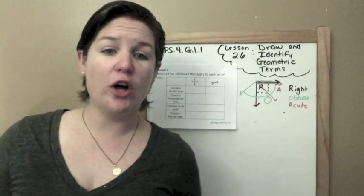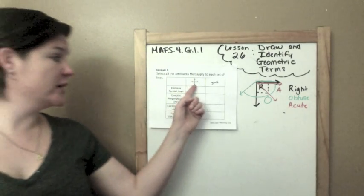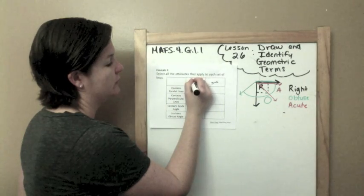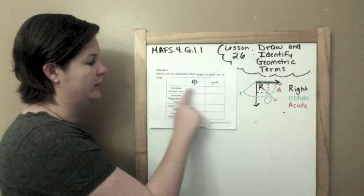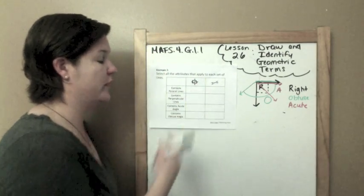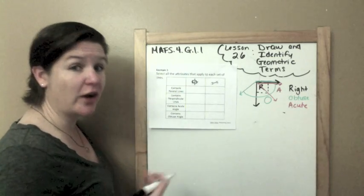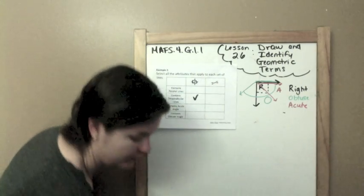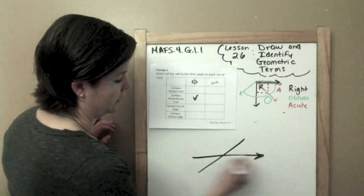All right. Example two, select all the attributes. Those are the characteristics that apply to each set of lines. So I've got here lines that are making and forming right angles. Here's a right angle, right angle, right angle, and right angle. And then here I have just two lines that are crossing over each other. So for this one, does this contain parallel lines, lines that never ever cross? No, they do cross and so do these. So we are not going to select that. Contains perpendicular lines. Perpendicular lines are lines that cross and form right angle. So yes, this one does. But right here we've got, if you zoom in, let me actually remake it down here so I can kind of point it out.